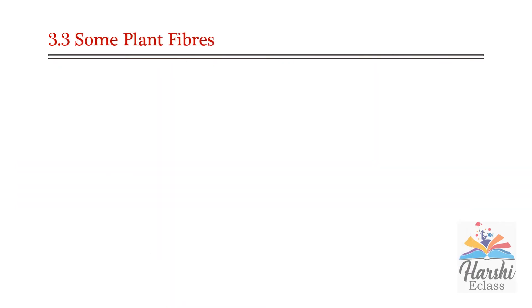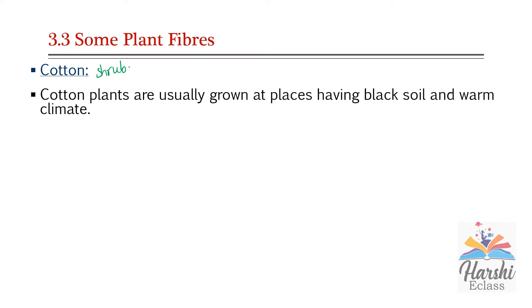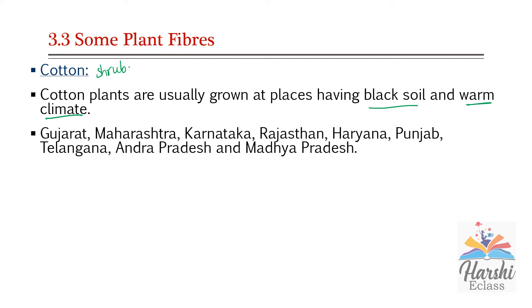Some plant fibers — first, cotton. Cotton is a shrub. It needs moderate rainfall and mainly grows in places with black soil and warm climate. In India, cotton mainly grows in Gujarat, Maharashtra, Karnataka, Rajasthan, Haryana, Punjab, Telangana, Andhra Pradesh, and Madhya Pradesh.